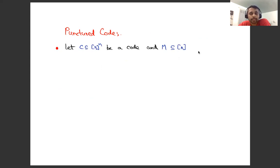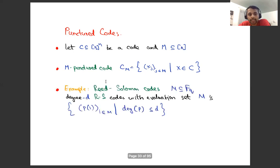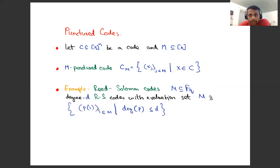Here's the last bit of notation. Let C be a code and M be a set of indices. An M-punctured code, denoted C_M, is just the codewords in C restricted to the coordinate indices in M — you write down all codewords in C but only at the indices in M. As an example, let M be any subset of the field F_Q. The degree D Reed-Solomon code with evaluation set M is the evaluation of all degree-at-most-D polynomials at all points in M. In some sense, Reed-Solomon codes are also punctured codes.